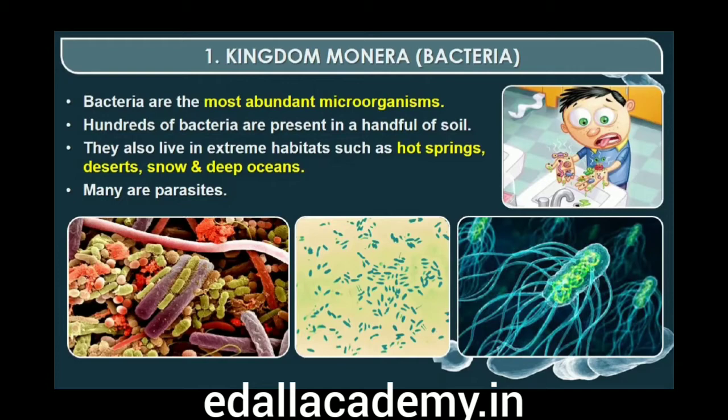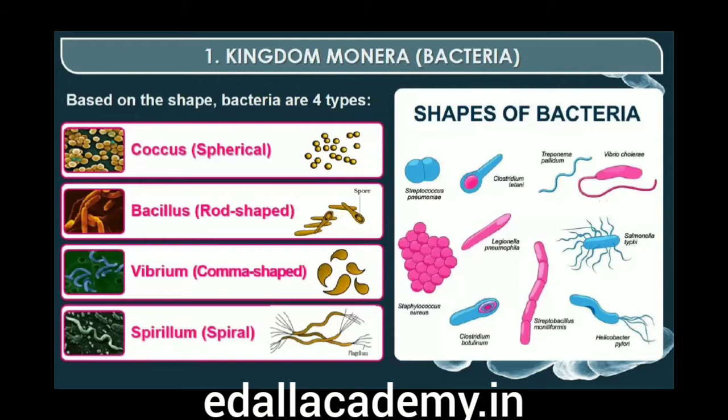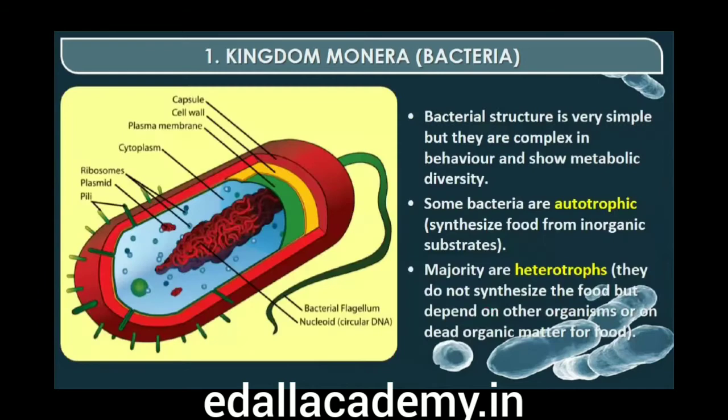Bacteria are grouped under four categories based on their shape: the spherical coccus (plural cocci), the rod-shaped bacillus (plural bacilli), the comma-shaped vibrium (plural vibrio), and the spiral spirillum (plural spirilla). Though the bacterial structure is very simple, they are very complex in behavior. Compared to many other organisms, bacteria as a group show the most extensive metabolic diversity.